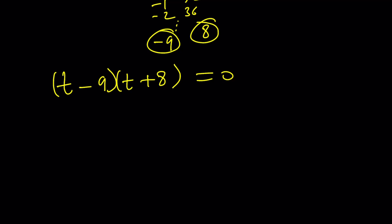Great. So, what do we get from here? We should be getting two solutions, right? By setting t minus 9 equal to 0, I'm getting t equals 9. Awesome. And by setting t plus 8 equal to 0, I'm getting t equals negative 8. Again, awesome, right?